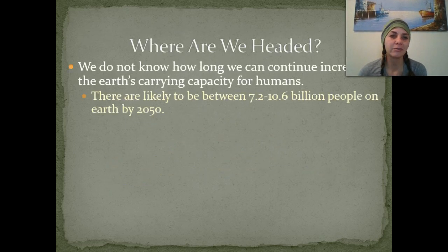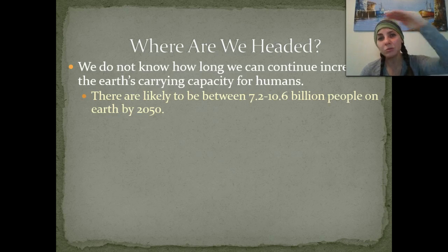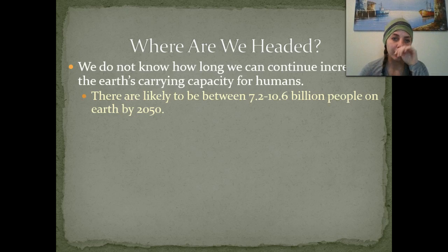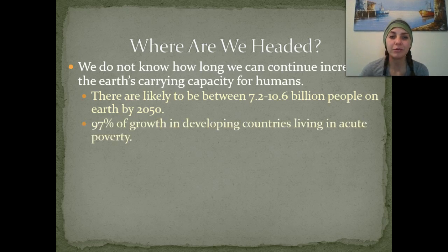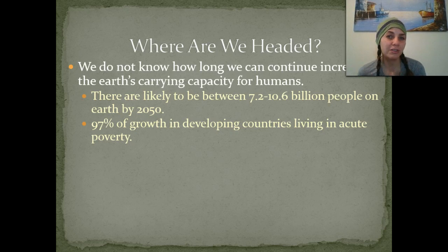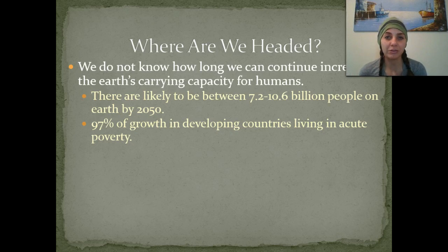So where exactly are we headed? We don't know exactly how long we can continue increasing the Earth's carrying capacity for humans. We know at some point we have to reach that little hump, or the carrying capacity. There are likely to be between 7.2 to 10.6 billion people on Earth by 2050, and that projection has even increased to 12 billion. 97% of the growth is occurring in the developing countries, and those 97% are living in acute poverty.